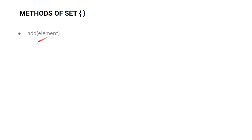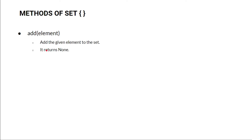Hey there guys, welcome back. Today we'll see the methods of class set. The first method of class set is add. The add method adds a given element to the set. If the element is already present, it does not add any element and it returns None.